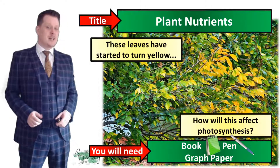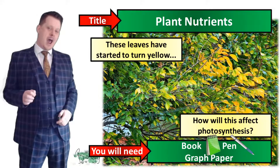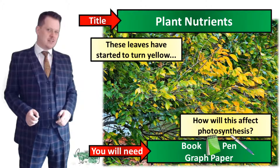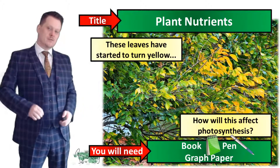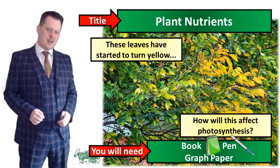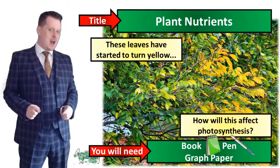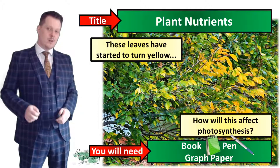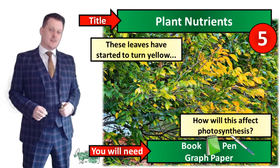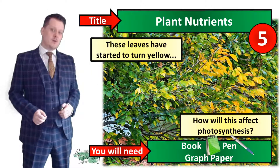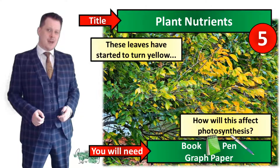In your books I'd like to get down today's title which is plant nutrients. For our starter activity I would like us to consider these leaves which have started to turn yellow. Try to explain how this yellowing of these leaves will affect photosynthesis. I'm going to put five seconds on the clock; if you need more time pause the video and when you're finished we'll go through the answers together.